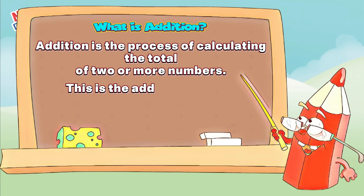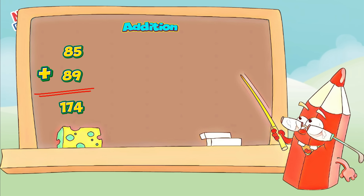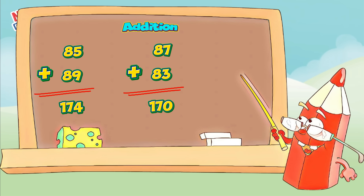This is the addition symbol. 85 plus 89 is equal to 174. 87 plus 83 is equal to 170. 63 plus 5 is equal to 68.